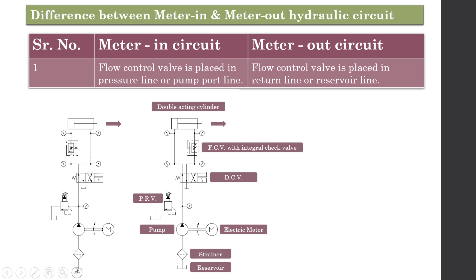This is the meter-in hydraulic circuit. From the reservoir, the liquid enters the strainer, then the pump and motor, then through the pressure relief valve and direction control valve, into the flow control valve. The flow control valve is placed in the pressure line — the port connected to the pump — hence it is called the pressure line or pump port line. The integral check valve prevents fluid from bypassing, so it must pass through the restricted opening of the flow control valve.